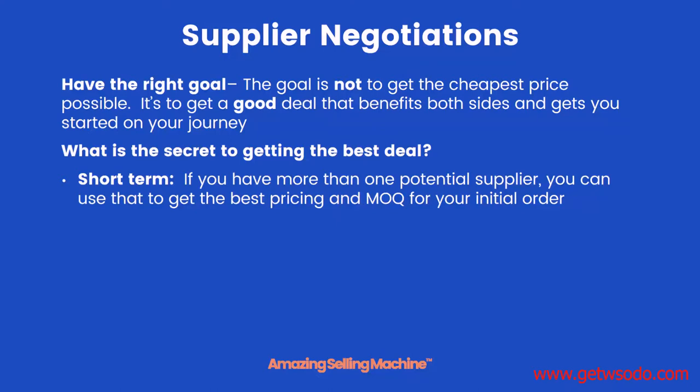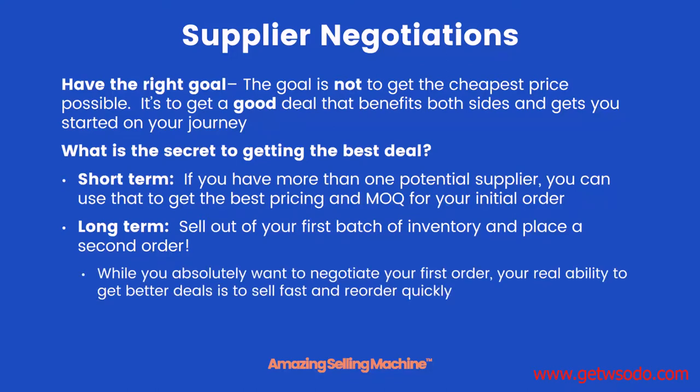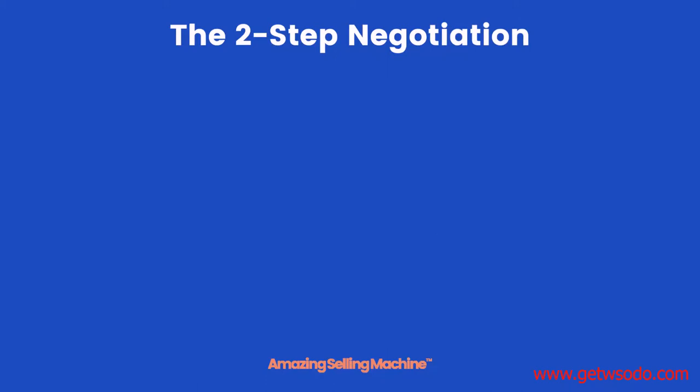In the long term, however, the best way to get the best deals is to sell out of your first batch of inventory and quickly place a second order. While you absolutely want to negotiate on this first order and you can, your real ability to get better deals is to sell out fast and reorder quickly. That's what will get the supplier's attention and make them want your business even more.